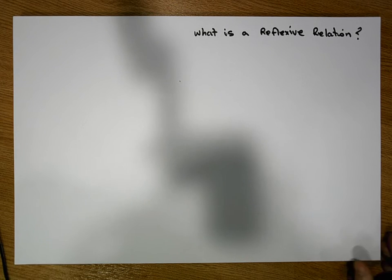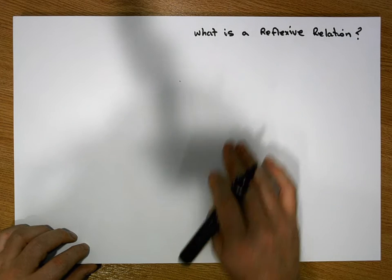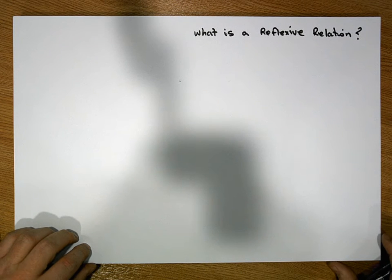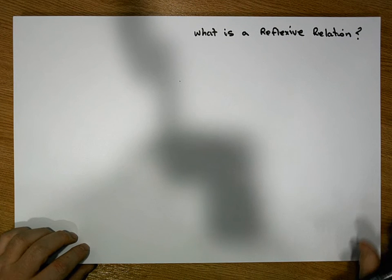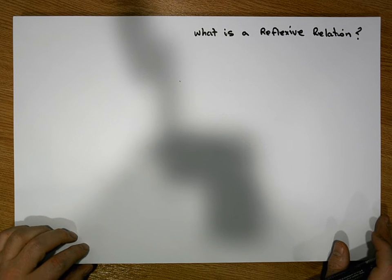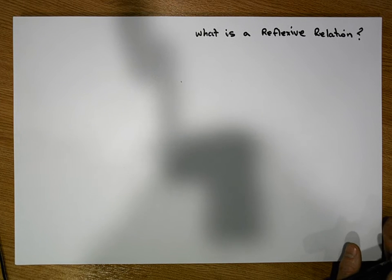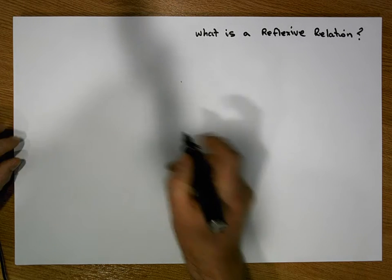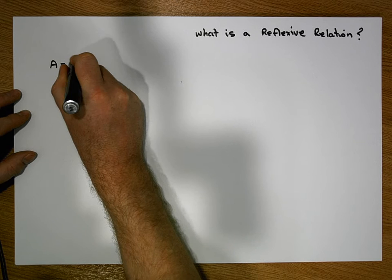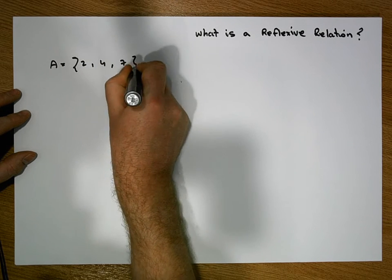To have a relation, or to create a relation, a relation is created on a particular set. A relation is simply a subset of a cross product. In our previous example, we had a set that contains the values 2, 4, and 7.